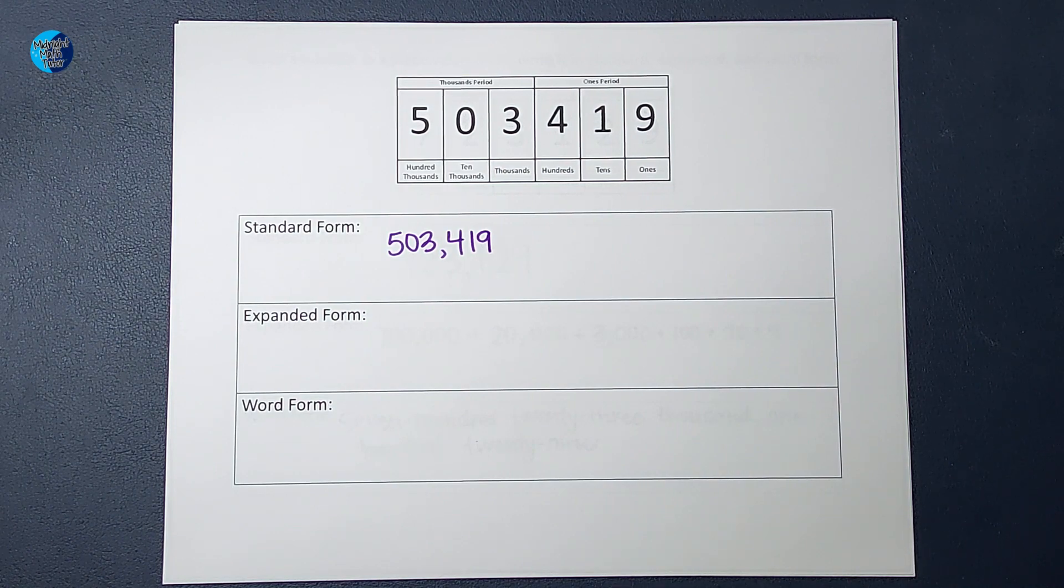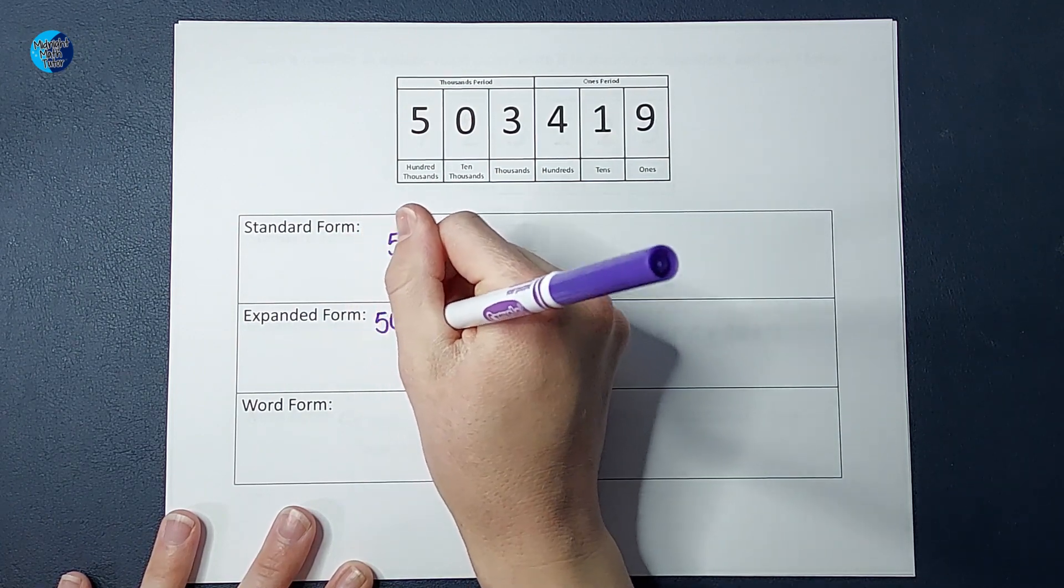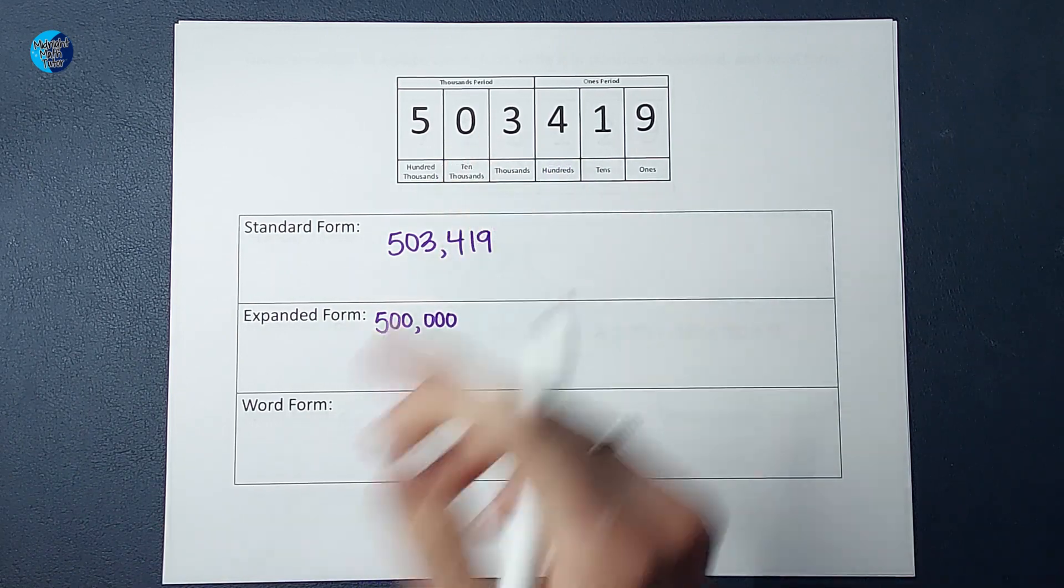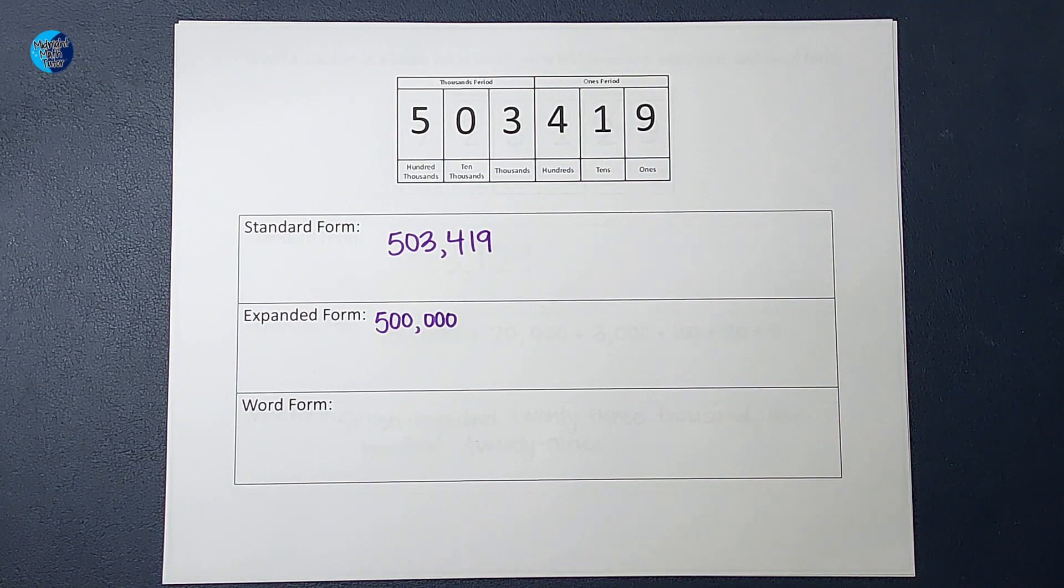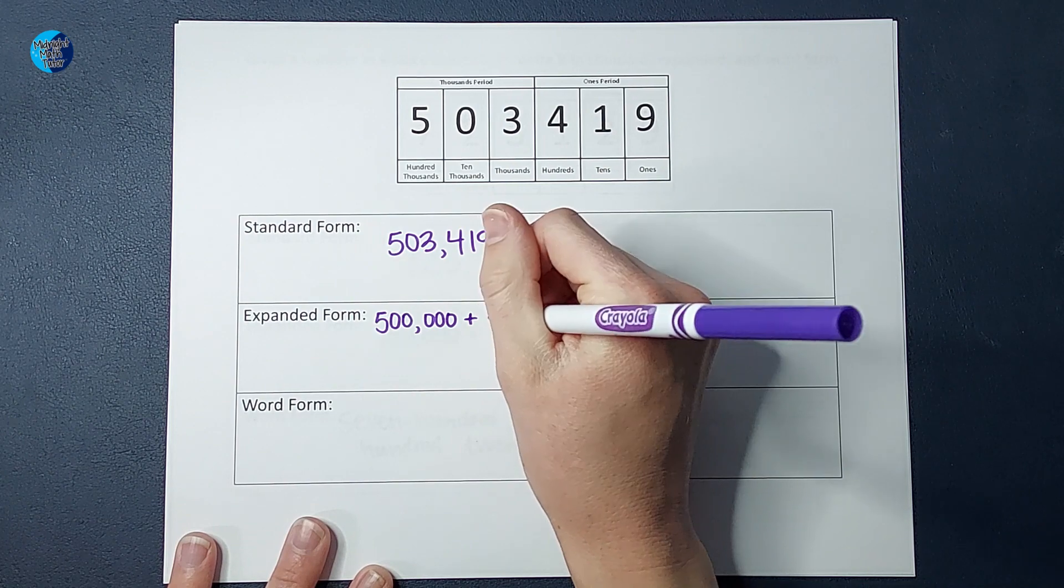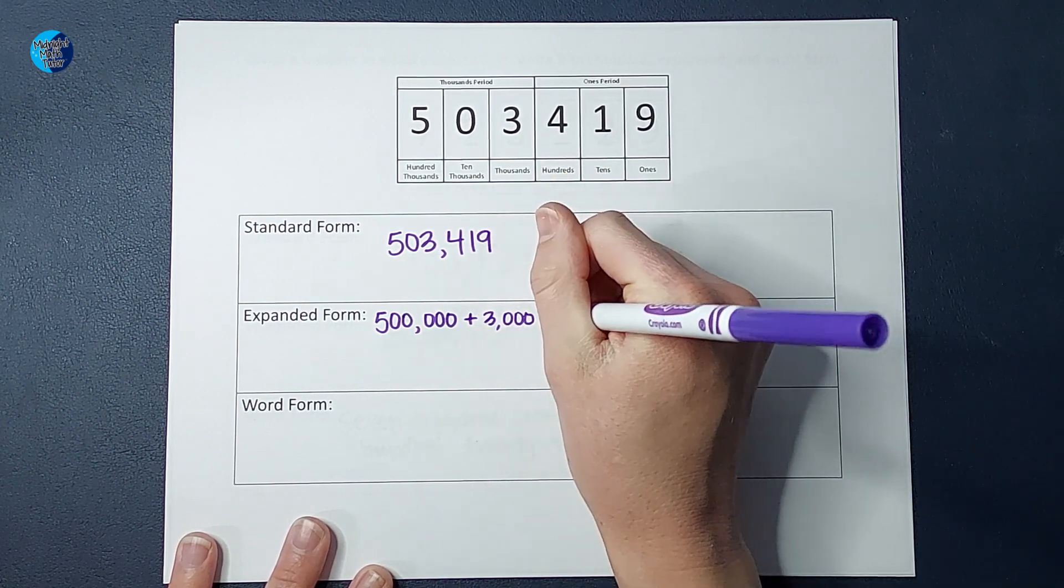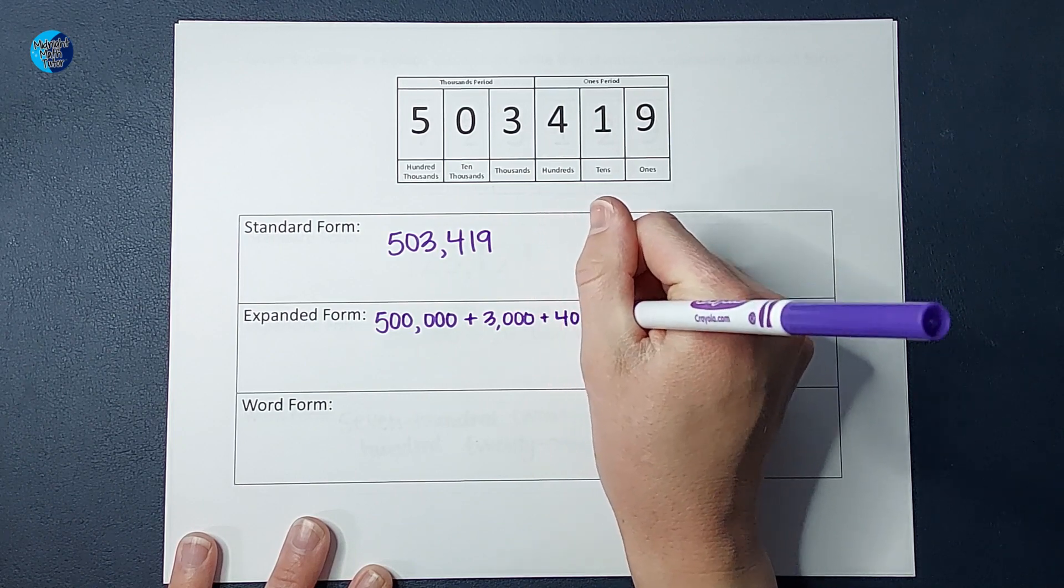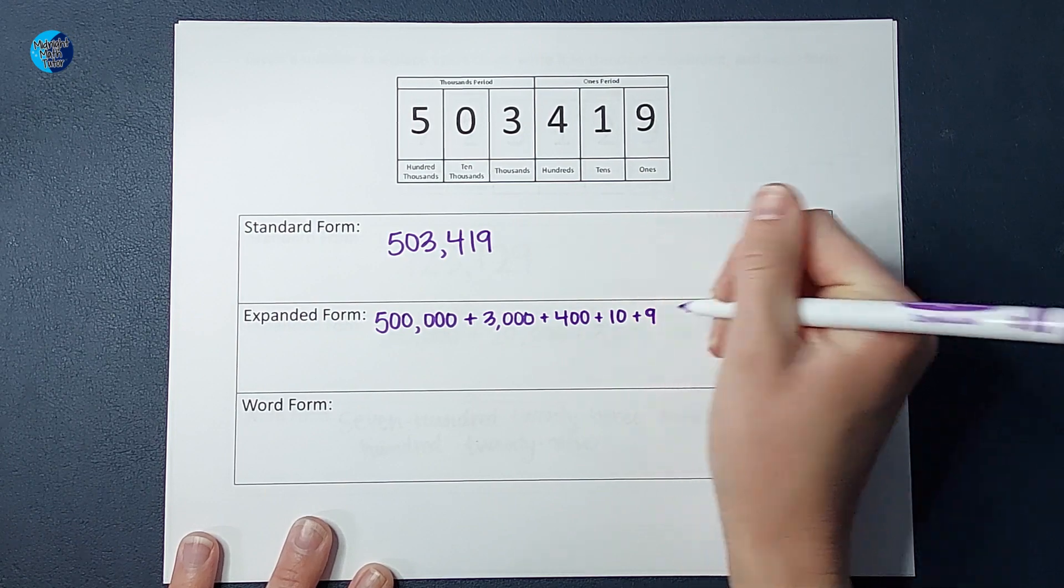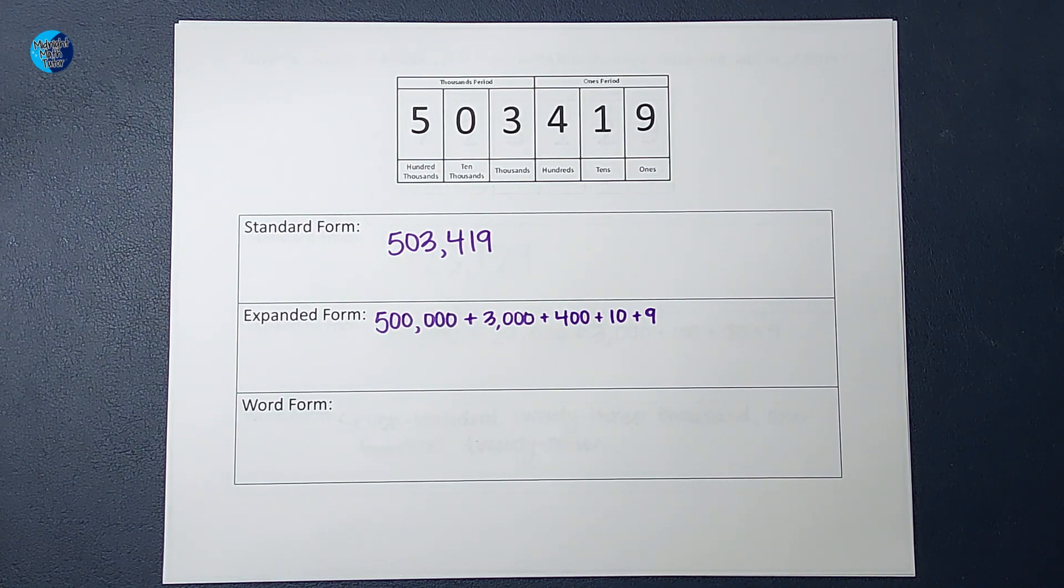Expanded form, we are breaking it up by place value. So, the 5 means 500,000. And now that we have that zero there, I don't need to write plus zero. I just skip over it. So, we don't have any 10,000s. So, next, I'm just going to add the 3,000, plus 400, plus 10, plus 9. So, there is my expanded form.